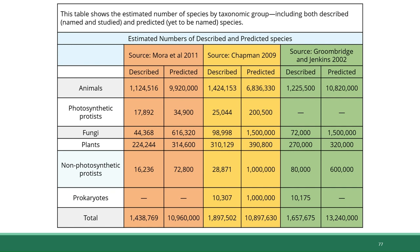As you can see, over a million different animal species have been described, but different scientists' estimates suggest somewhere between 6.8 and 10.8 million are out there. The bottom line is that there's a lot of biodiversity that we know about, but there's also a lot of biodiversity that we don't know about because it hasn't been identified yet.